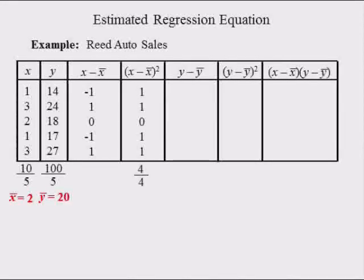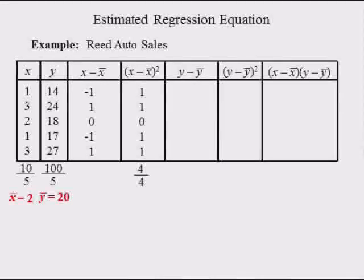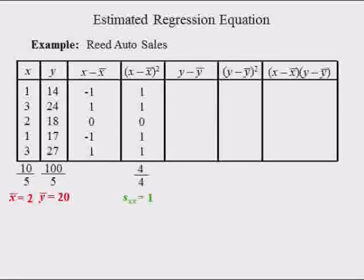The sum of the five squared deviations is 4. Dividing this by the sample size 5 minus 1 yields a sample variance equal to 1 ad squared.